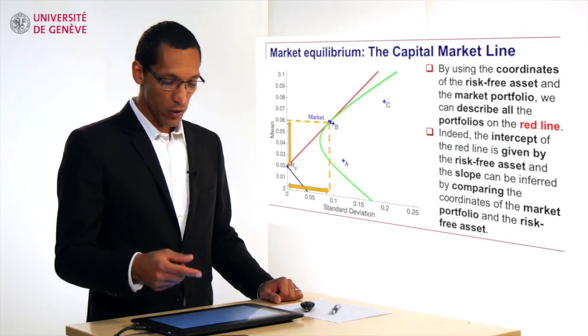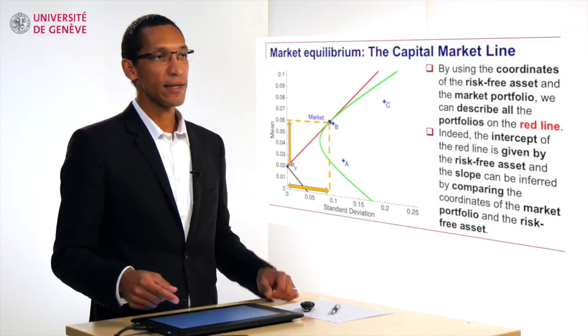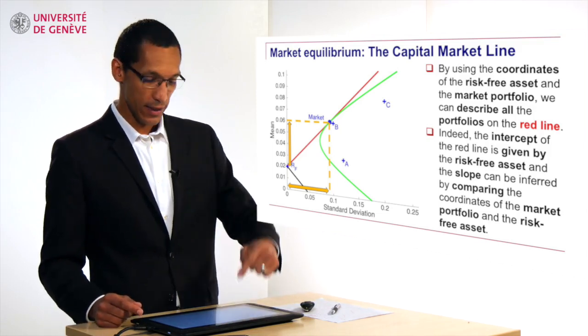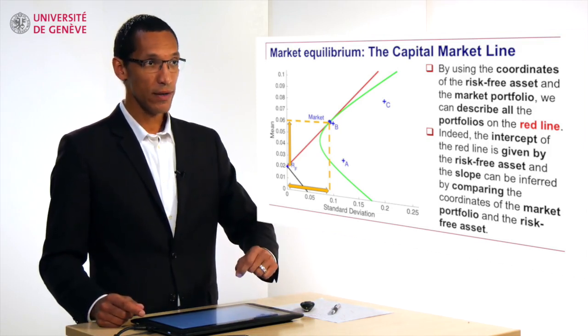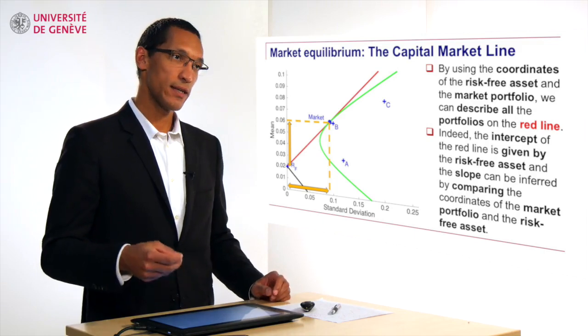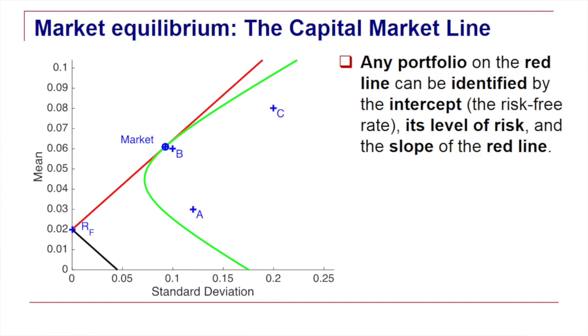Now any portfolio which is on the red line can be identified by the intercept, the origin, the risk free rate, the level of risk it is exposed to, and the slope of the red line. This relation between the expected return of an efficient portfolio and its level of risk is called the capital market line.